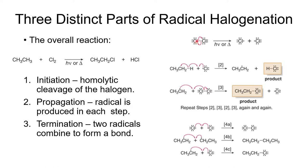Termination occurs when two radicals collide. There are three possibilities: (4a) two Cl• radicals recombine to give Cl2; (4b) two carbon radicals couple to form a new C–C bond — this byproduct forms in small amounts; or (4c) a carbon radical and a Cl• combine to give the alkyl chloride product. Most product forms via the propagation cycle, not termination, because radical concentrations are low.